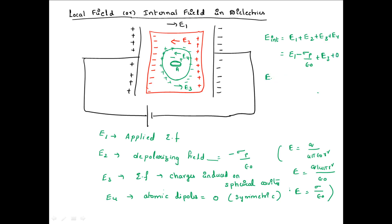So E_internal equals E1 minus σp/ε₀ plus E3. We now need to calculate the electric field E3 produced due to the spherical cavity. Let this be equation 1, and we take the spherical cavity separately to find E3.